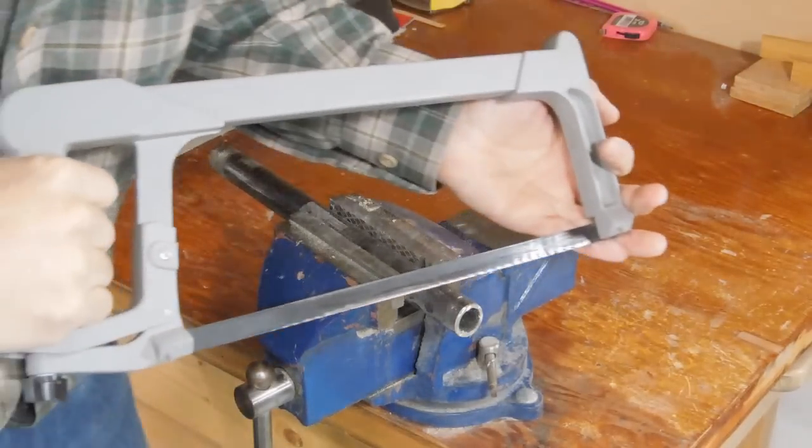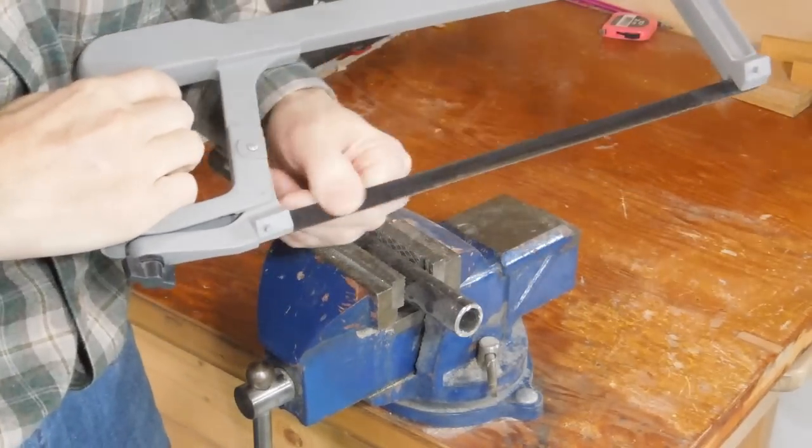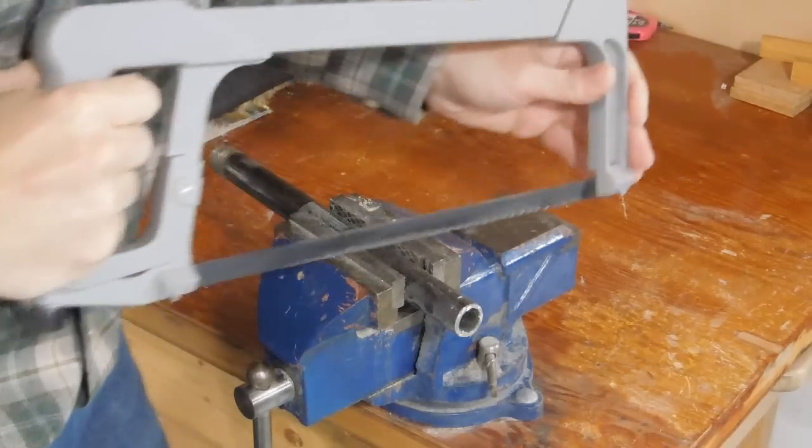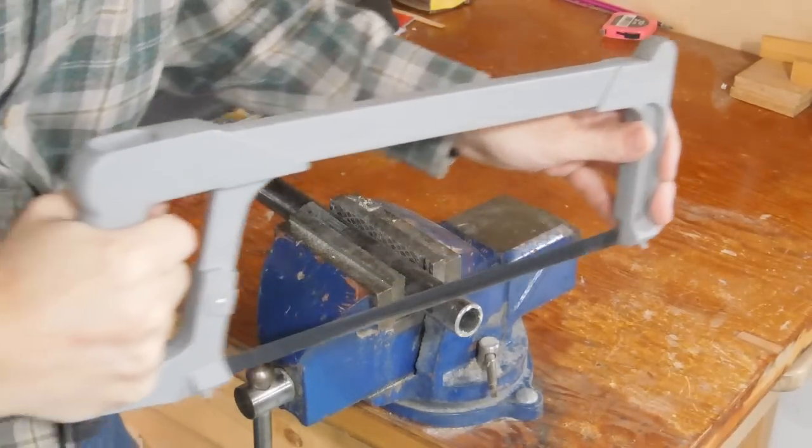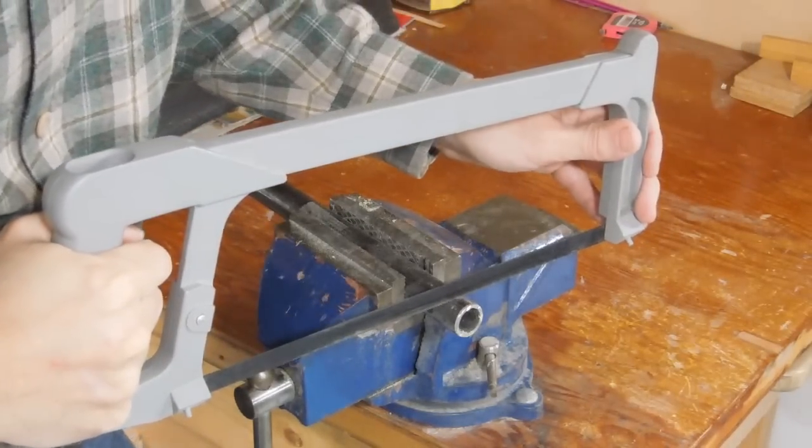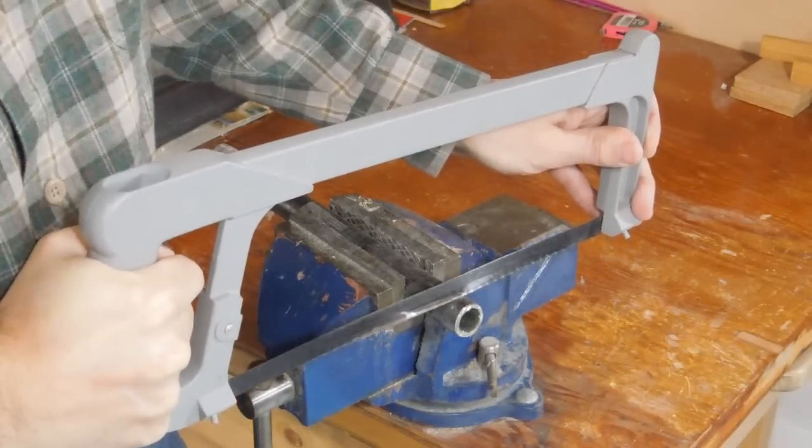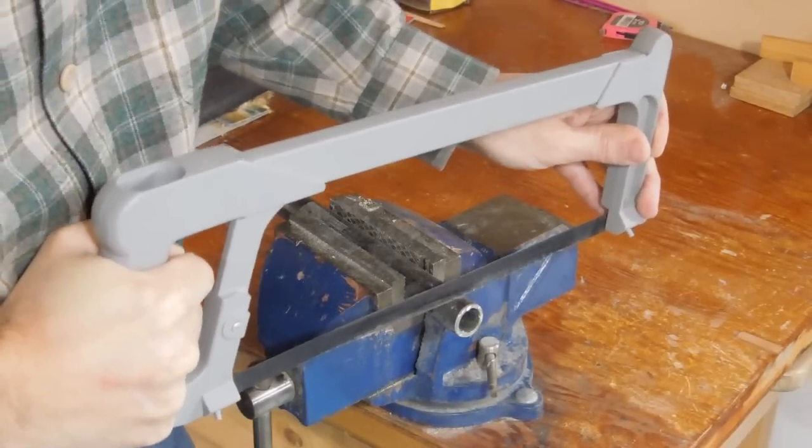Now, you've probably experienced this insufficient beam strength problem in a hacksaw because the blade on here is in some ways similar. So if I want to cut through here, if I just apply a light amount of pressure, I'm okay. But if I want to really bear down on this, the blade tends to want to twist sideways and I don't get a straight cut. So it keeps doing this.